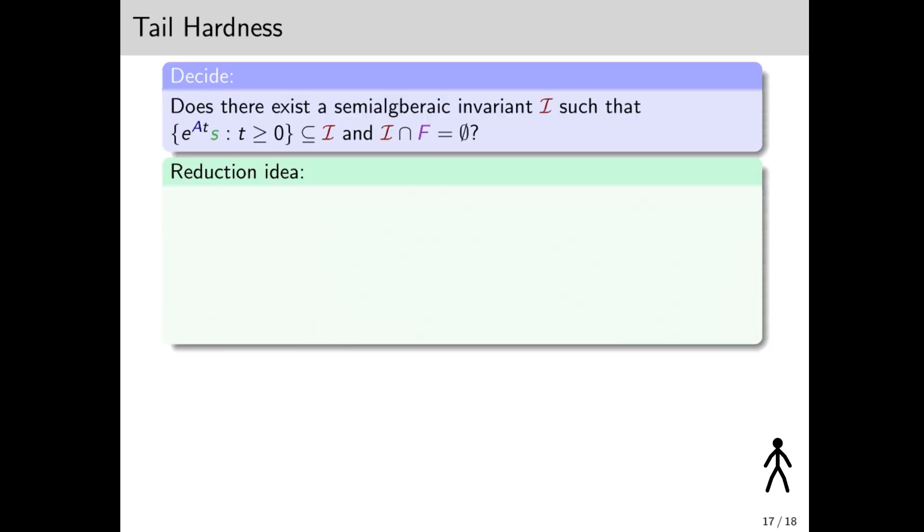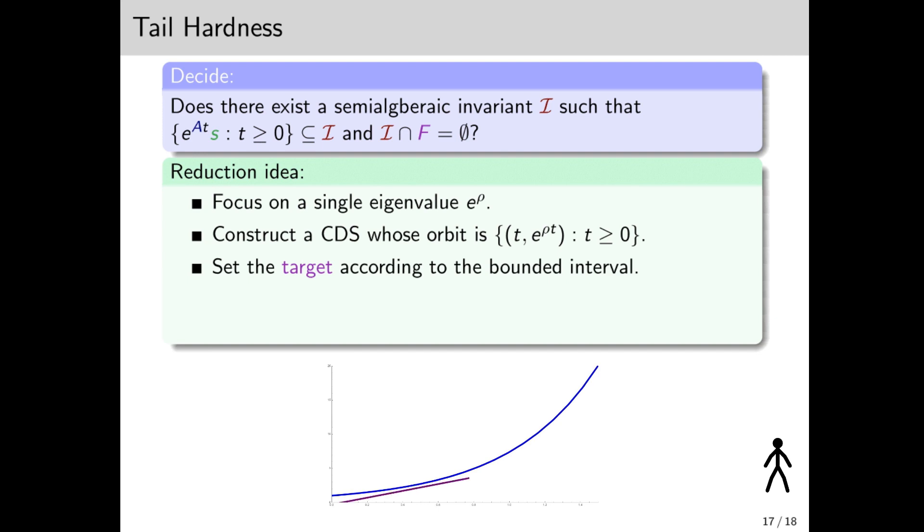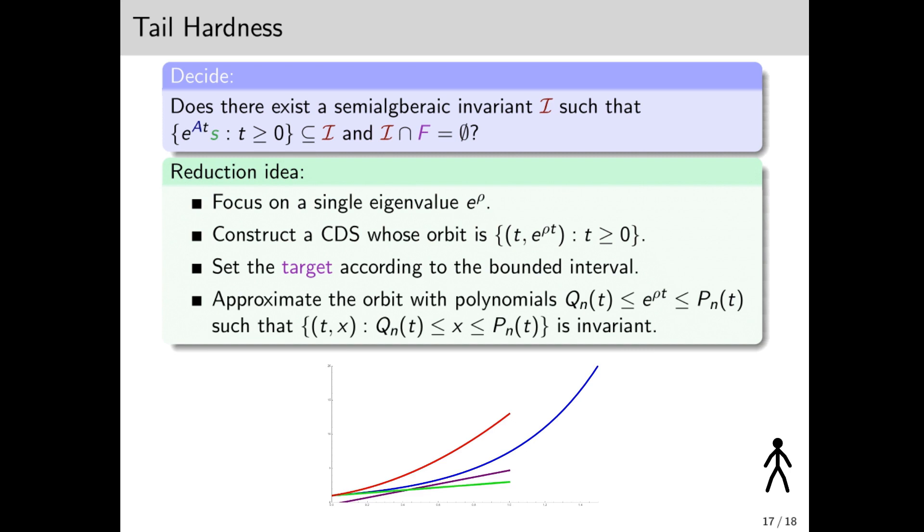So how does the reduction work? Let's focus on the single eigenvalue, e^(ρt). We construct a CDS whose orbit is this, and we set a bounded target according to the bounded interval. We now approximate the orbit with upper and lower polynomial bounds, such that the set of points between them forms an invariant to the CDS when we add the region of all points above the bound. Then the orbit doesn't intersect the target in the bounded domain, if and only if there is a semi-algebraic invariant obtained by tightening the bounds enough.